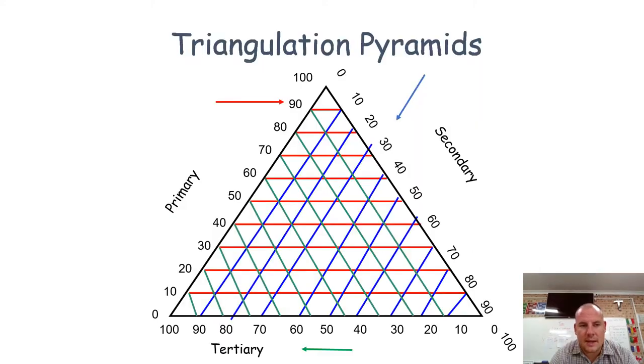Let's have a look at a triangular graph. A triangular graph is a way to represent three sets of data from three different variables.